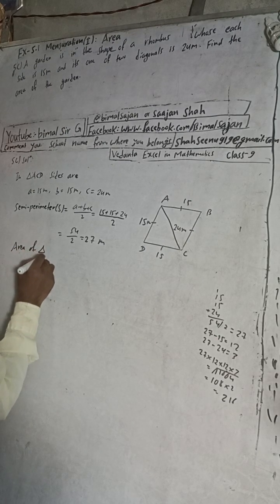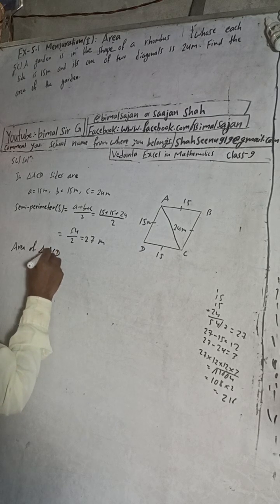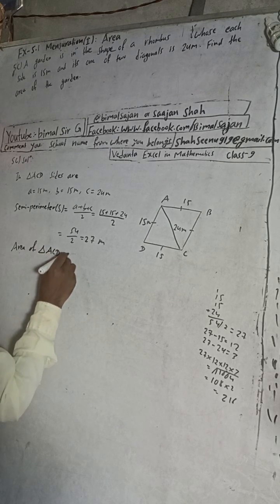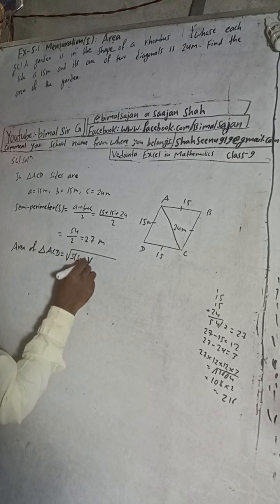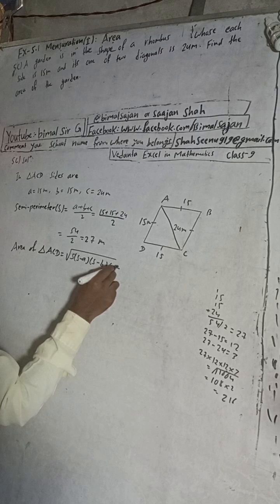Area of triangle ACD. The formula will be: square root of s times s minus a times s minus b times s minus c.